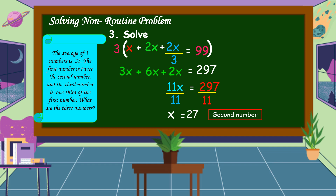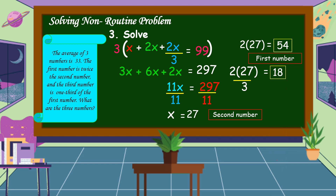To find the first number, which is 2x, we substitute x equals 27: 2 times 27 is 54. This is our first number. The third number is 2x divided by 3: 2 times 27 is 54, divided by 3 is 18. This is our third number. Therefore, the three numbers are 54, 27, and 18.